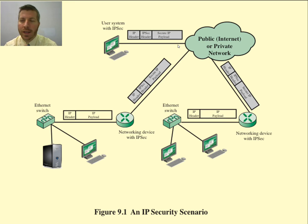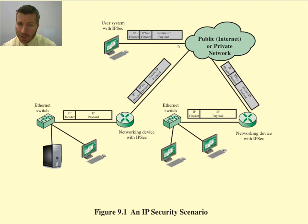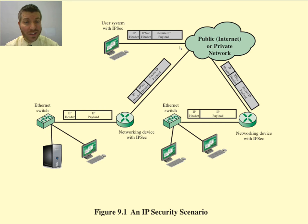Looking at the OSI model: at layer 4, we have a segment — a header is added and the payload is what came from layer 5. Going down to layer 3, the IP layer adds a header, and the payload of that layer 3 packet is the segment. That segment is now secured as the secure IP payload, meaning it is encrypted. The only thing unencrypted at this point is the IP header at layer 3, and below that, layer 2 is also unencrypted.